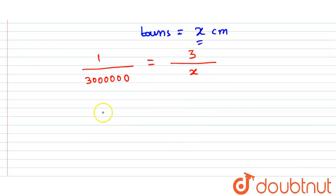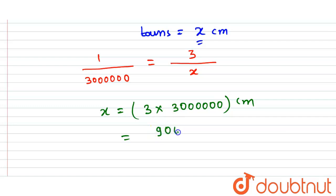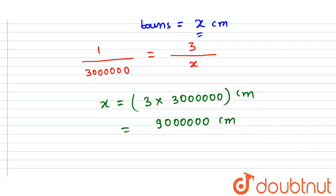From here, x is equal to 3 into 30 lakh. That gives us x equal to 90 lakh centimeters — 90 followed by 5 zeros — in centimeters.